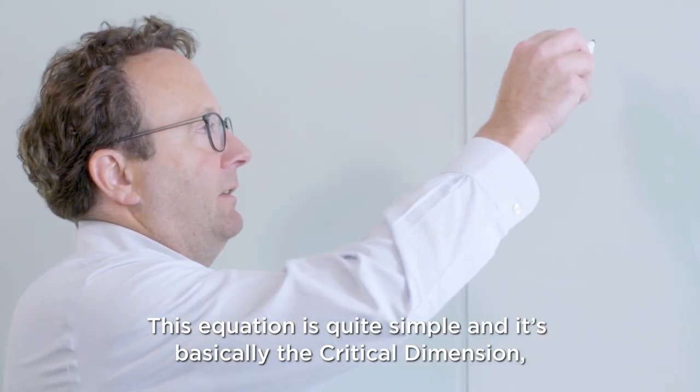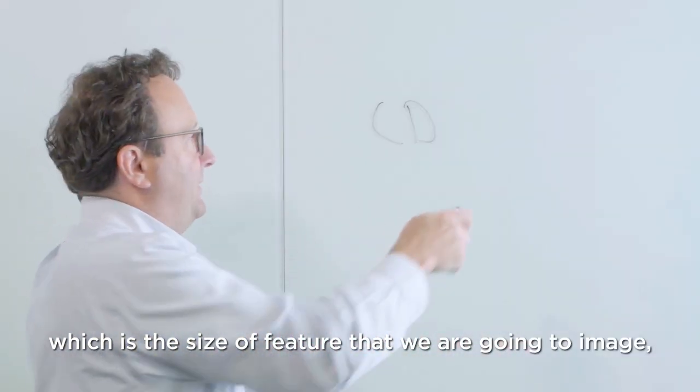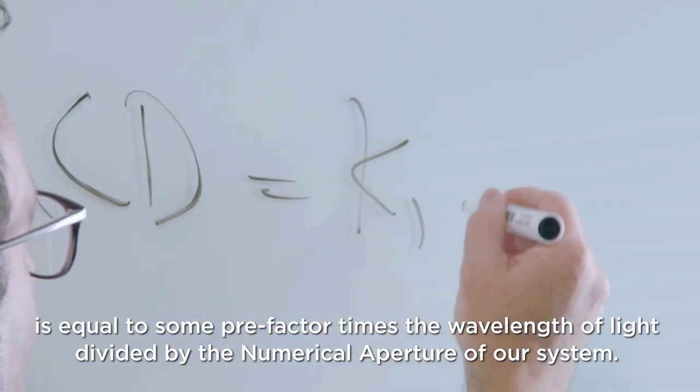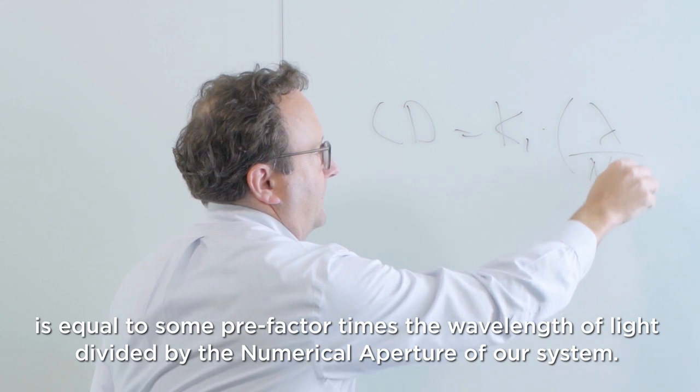This equation is quite simple and it's basically the critical dimension, which is the size of the feature that we're going to image, is equal to some pre-factor times the wavelength of light divided by the numerical aperture of our system.